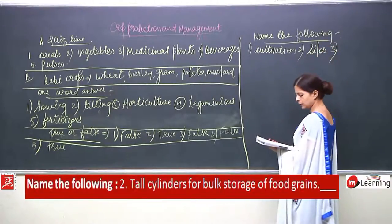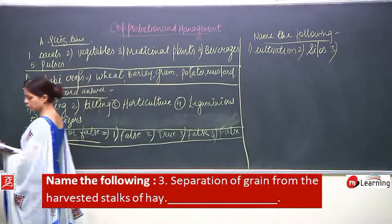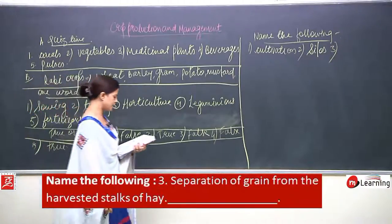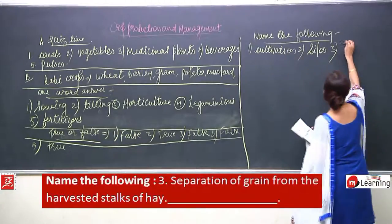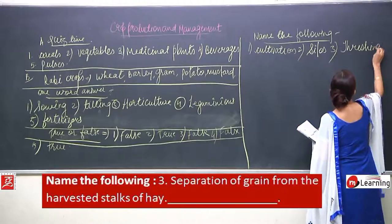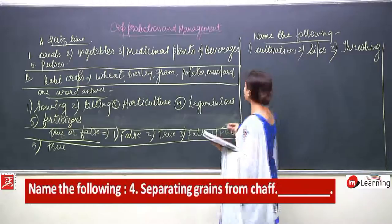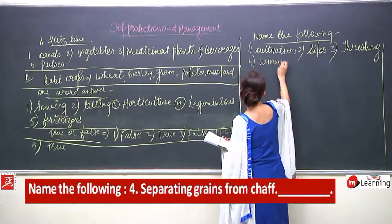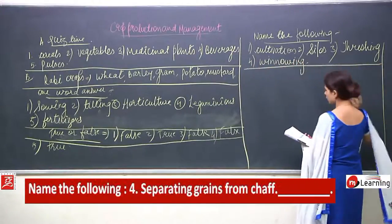Number 3: separation of grain from the harvested stalks of hay is threshing. Separating grains from the chaff — we all know this now.